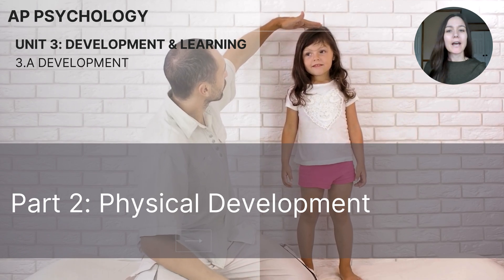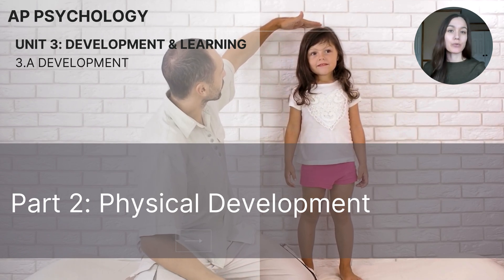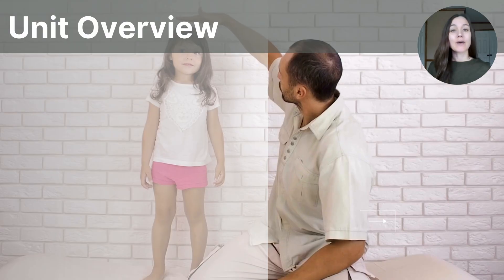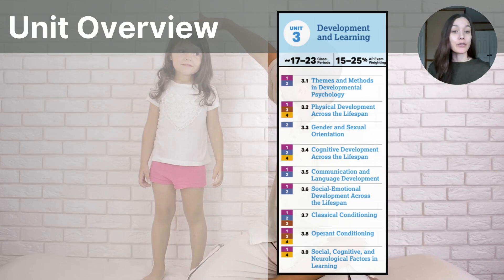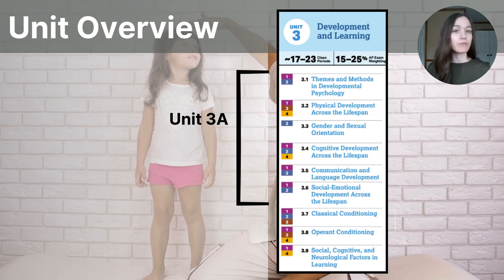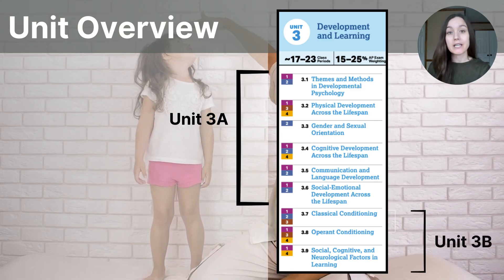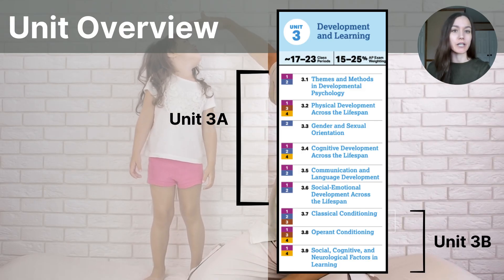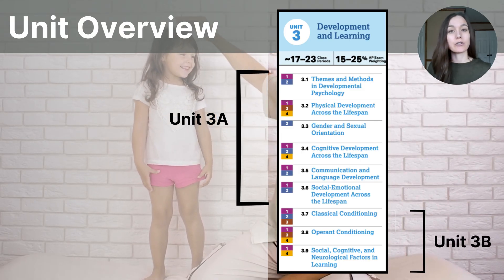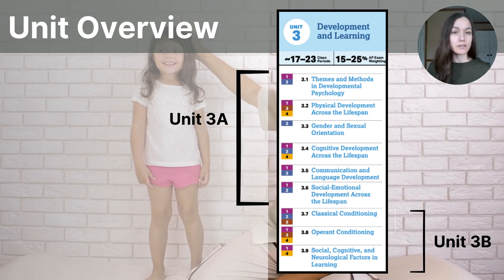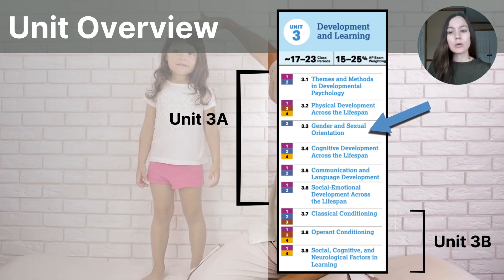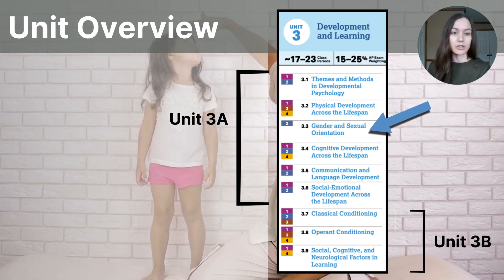Hi everyone. This video is part two in the 3A series on development for AP Psychology students. Unit 3 is divided into two sections: Part A that focuses on development and Part B that will focus on learning. Today's video will cover the sections titled 3.2 Physical Development Across the Lifespan and 3.3 Gender and Sexual Orientation.